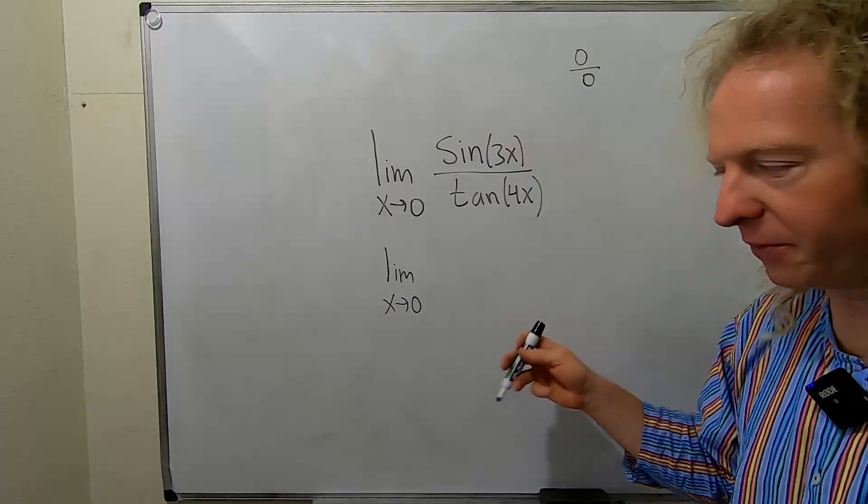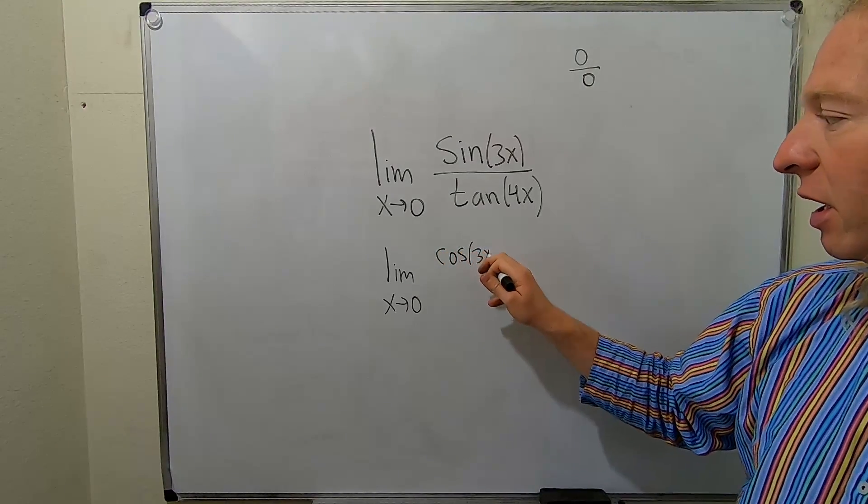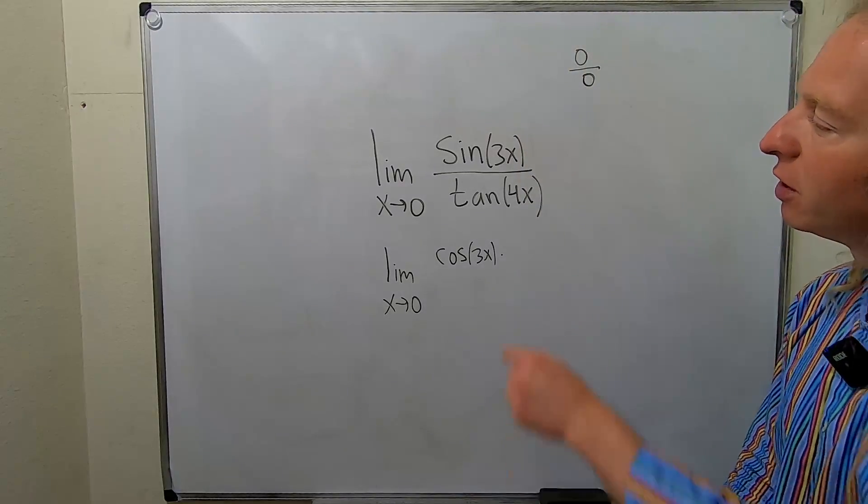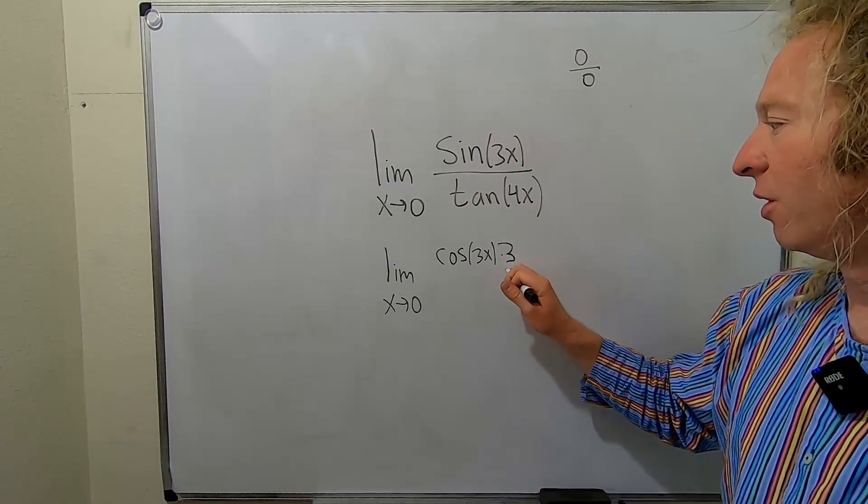The derivative of sine is cosine. So here it'll be cosine of 3x times the derivative of the inside. We have to use the chain rule. So the derivative of 3x is 3.